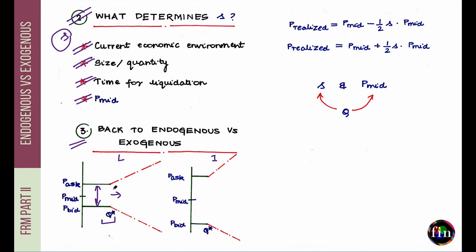As the trade size goes beyond Q*, P_ask rises — meaning you pay more and more for large quantities, and the market moves against you. Similarly when selling, P_bid falls lower as Q exceeds Q*. For the illiquid asset, the spread is already much bigger even to the left of Q*, and the Q* threshold is much lower.